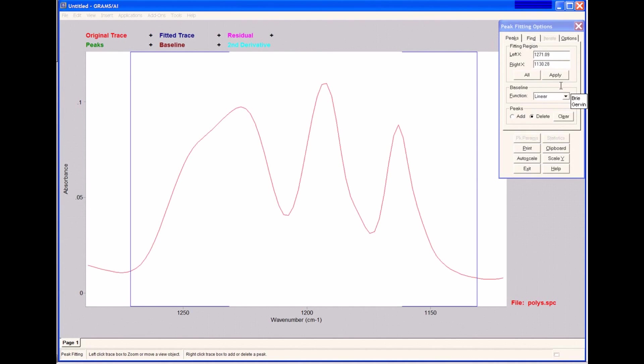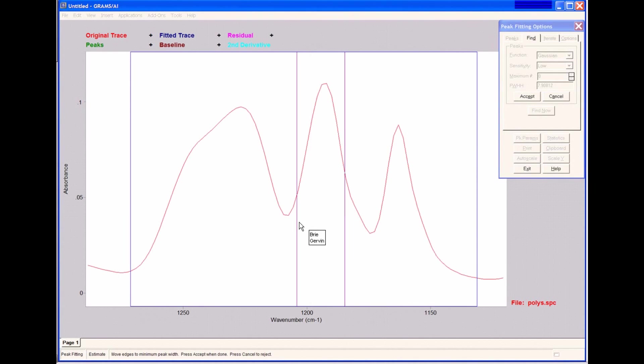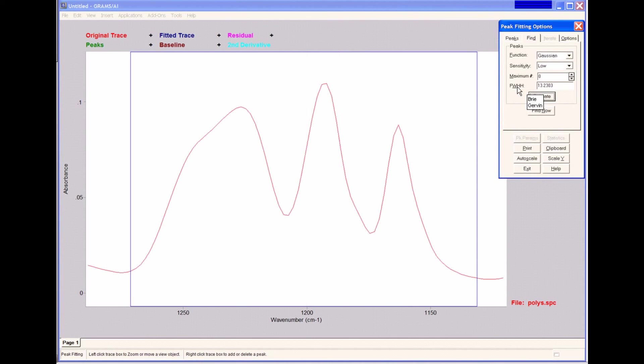We can auto find by clicking on the find tab. This is where we choose our peak function, the same function that was used when we manually add a peak. As you can see, we offer a full range of various peak line shapes. I'm going to select Gaussian for our example today. I can set the different parameters: the sensitivity, low, medium, or high; the maximum number of peaks. If I use zero, we will auto find any number. And the full width at half height. Now, if I don't know the full width at half height to use for my peaks, I can choose estimate. It brings up two lines in the middle here. They're purple. I can click and drag and change the value to estimate that full width at half height. I can choose accept, and it puts the new value into my full width at half height box.